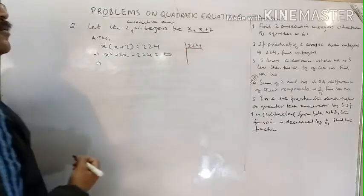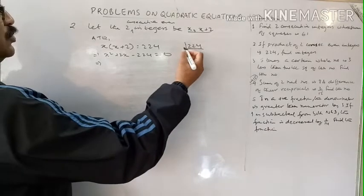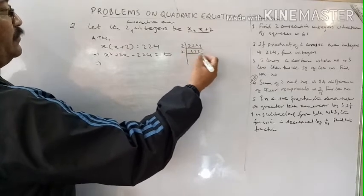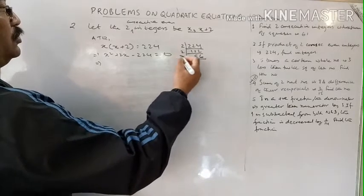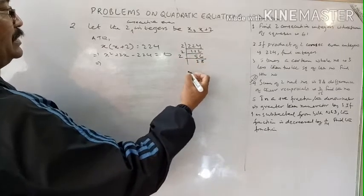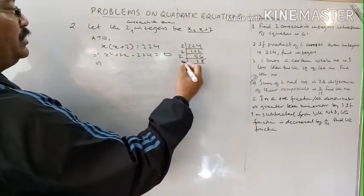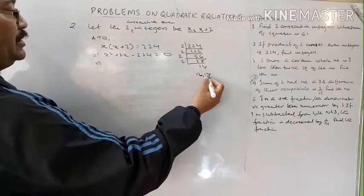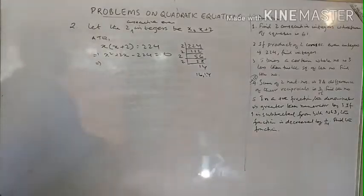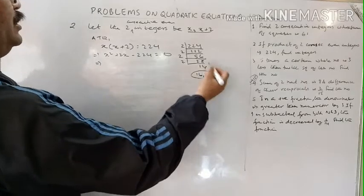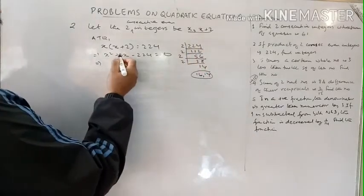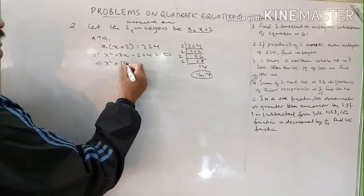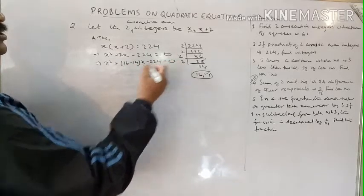Finding factors of 224: 16 times 14 equals 224, and 16 minus 14 equals 2, which matches the coefficient of x. So we write: x squared plus 16x minus 14x minus 224 equals 0. Taking x common from first two terms: x(x plus 16), then minus 14 common: minus 14(x plus 16) equals 0. So (x plus 16)(x minus 14) equals 0.